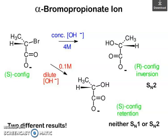So alpha-bromopropionate ions — look at these reactions. Here, the leaving group is on carbon; you can see this carbon has a leaving group, and COO⁻ with O⁻ has a lone pair of electrons, which is S-configuration. So what are the conditions? In concentrated base, the result is R-configuration (SN2 inversion). In dilute base — neither straightforward SN1 nor SN2 — you get S-configuration retention. Two different results.